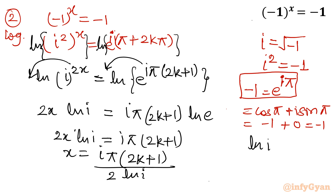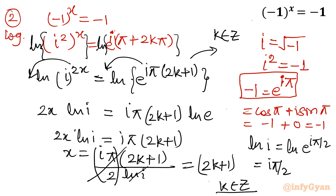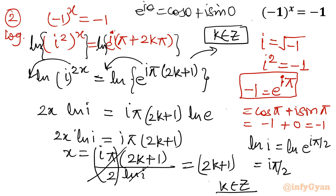Now, ln i: I write i as e raised to the power i pi over 2, so ln i equals i pi over 2 times ln e, which equals i pi over 2. Substituting back, the i pi terms cancel completely, and I get x equal to 2k plus 1, where k belongs to integer. This is because e raised to the power i theta equals cos theta plus i sine theta, and cosine and sine have period 2 pi, so the general solution includes 2k pi revolutions.